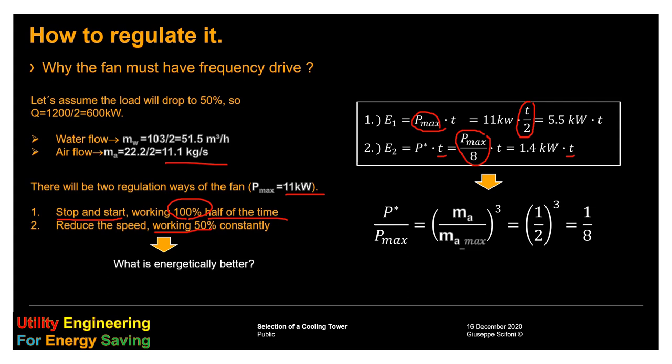Why? The reason is that between the power and the flow of a fan, axial fan in this case, there is a cubical law. So, the power is proportional to the cube of the air flow. In this case, the mass flow will be the half, so the power will be 1/8.